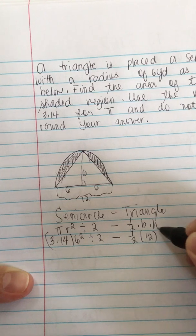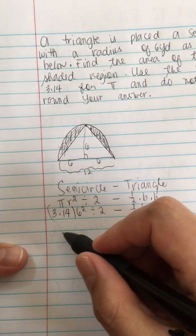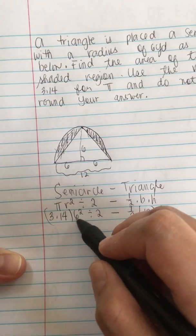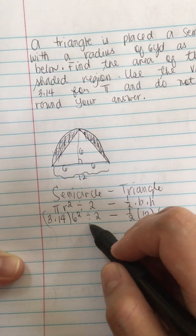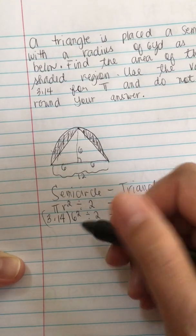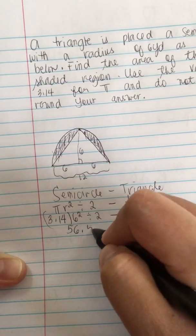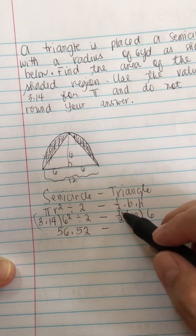Now we plug into our calculator. 6 times 6 is 36 times 3.14, and then we divide it by 2, we get 56.52. Now we multiply one half times 12 times 6, we get 36.